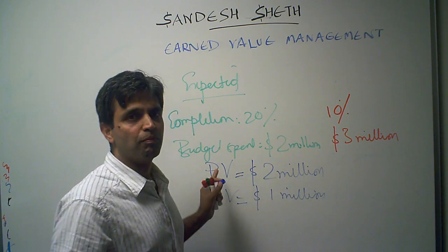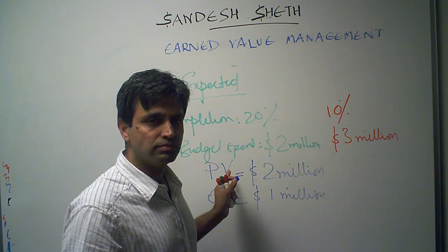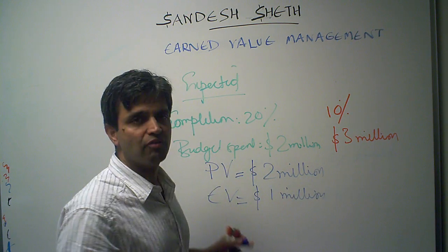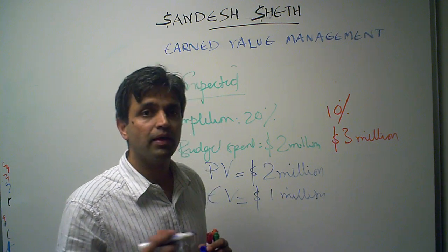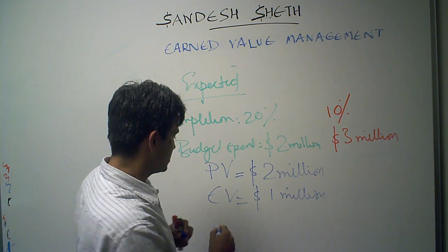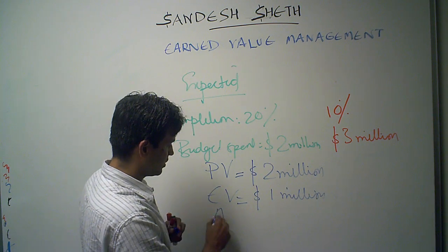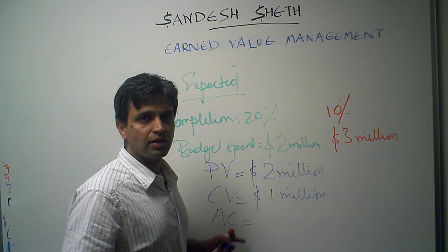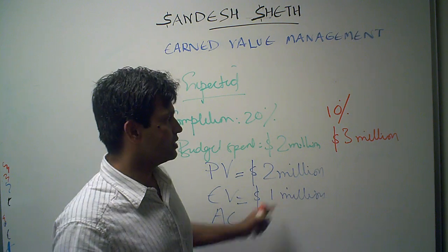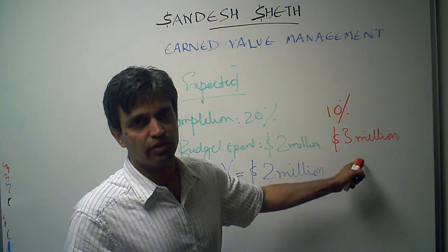So we have a planned value of $2 million and an earned value of $1 million. The actual cost in this case is $3 million.